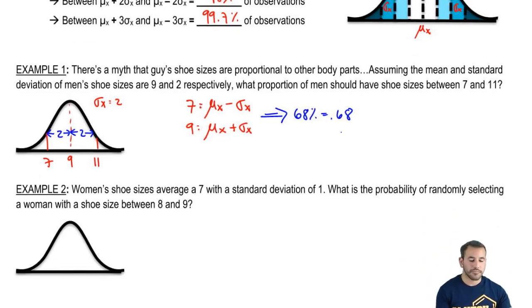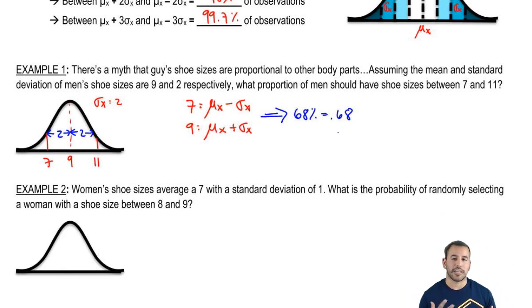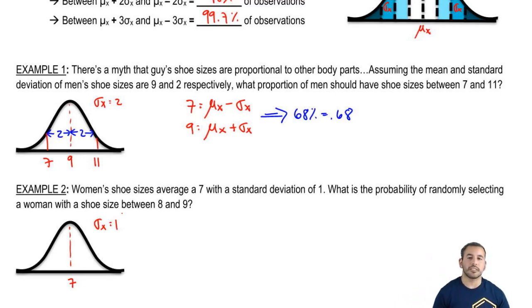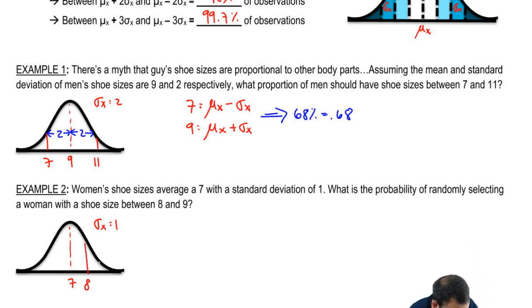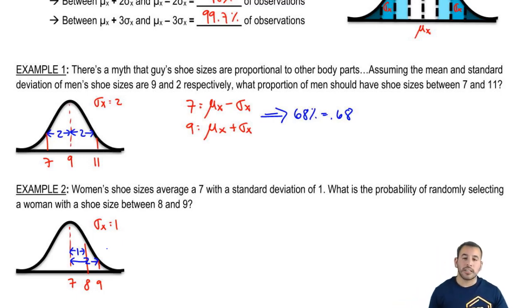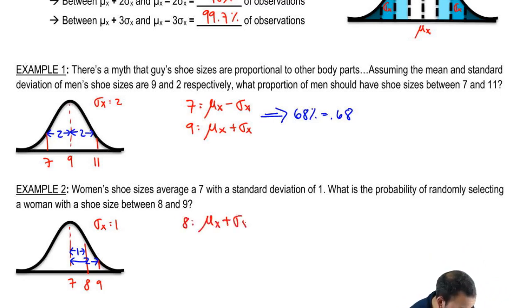Example two is a more advanced application. A woman's shoe size has a mean of 7 and standard deviation of 1. What is the probability of randomly selecting a woman with a shoe size between 8 and 9? Here, 8 is one standard deviation above the mean, and 9 is two standard deviations above the mean — both values are on the same side.